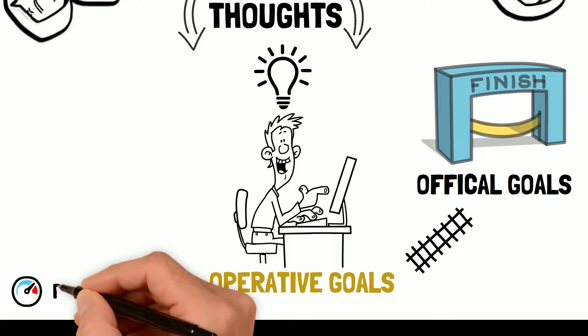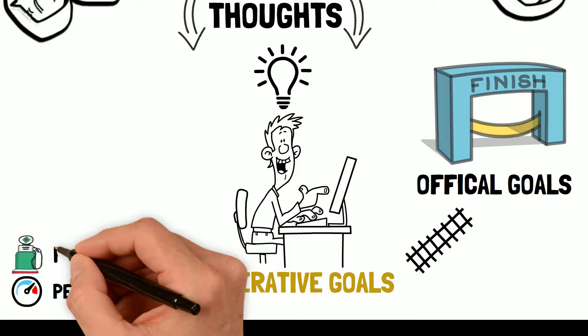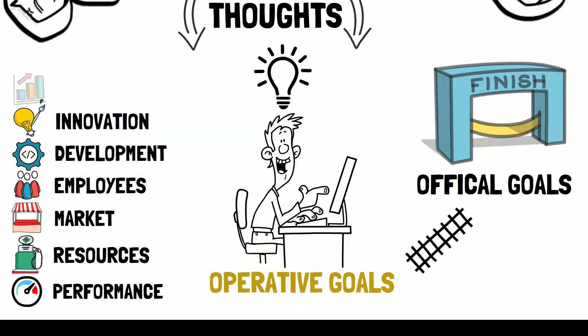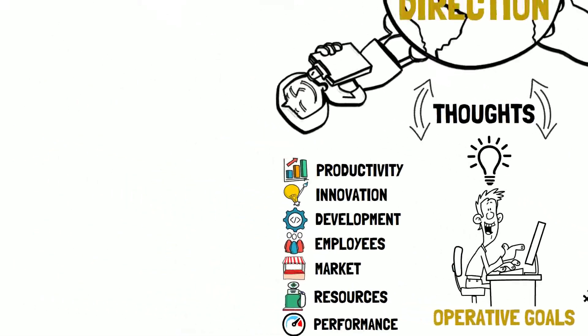Operative goals can be divided in performance, resources, market, employees, development, innovation and change, and productivity. Two examples of strategy models: Porter and Miles and Snow.